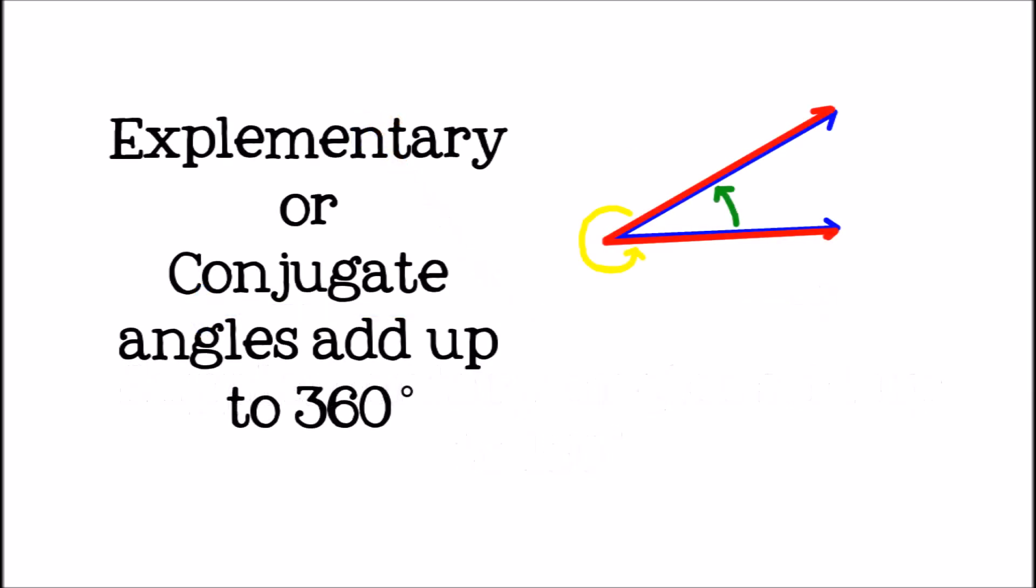Two angles that add up to make a full circle, or 360 degree angle, can be called either explementary or conjugate angles.